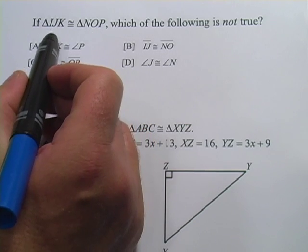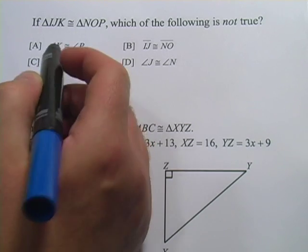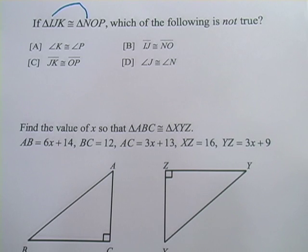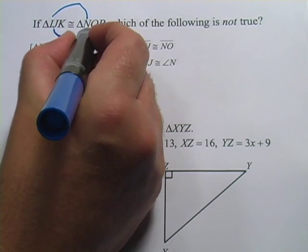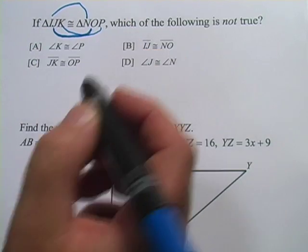And the only trick here is making sure that you have the right corresponding parts. So in this case, since I comes first and N comes first, I and N are corresponding angles, so they're going to have the same measure. J and O are going to have the same relationship, and K and P the same relationship.